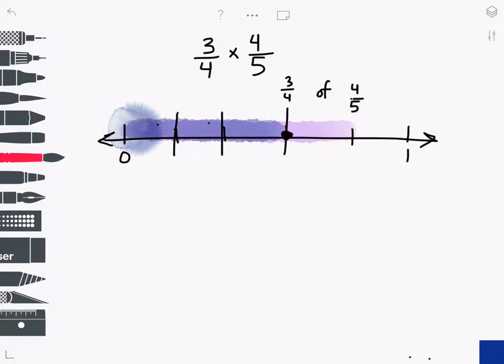And I can rename that spot on the number line as 3/5. This number line is segmented into fifths, and this spot on the number line is 3/5.